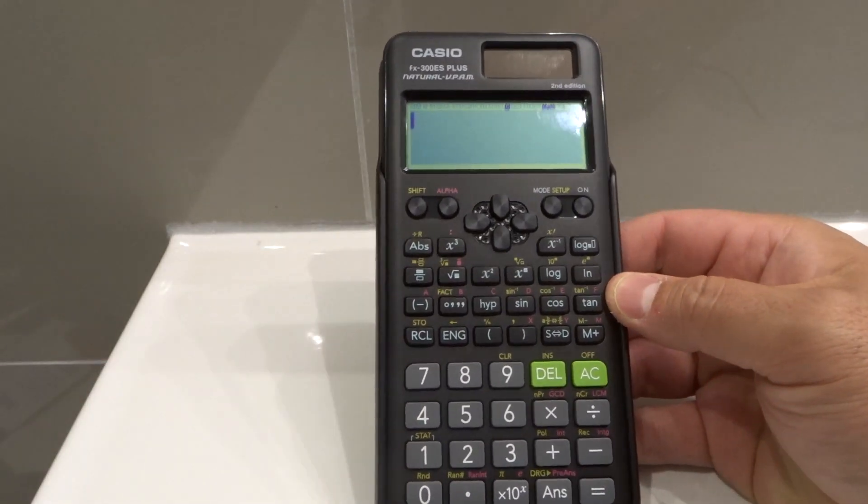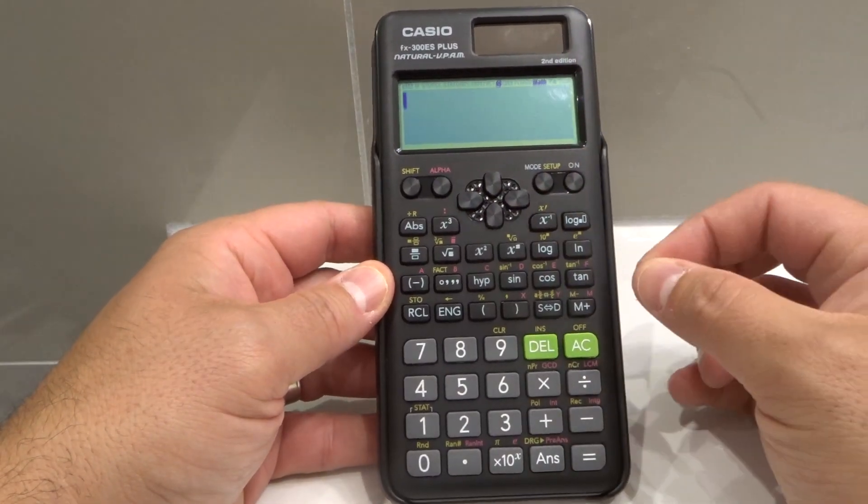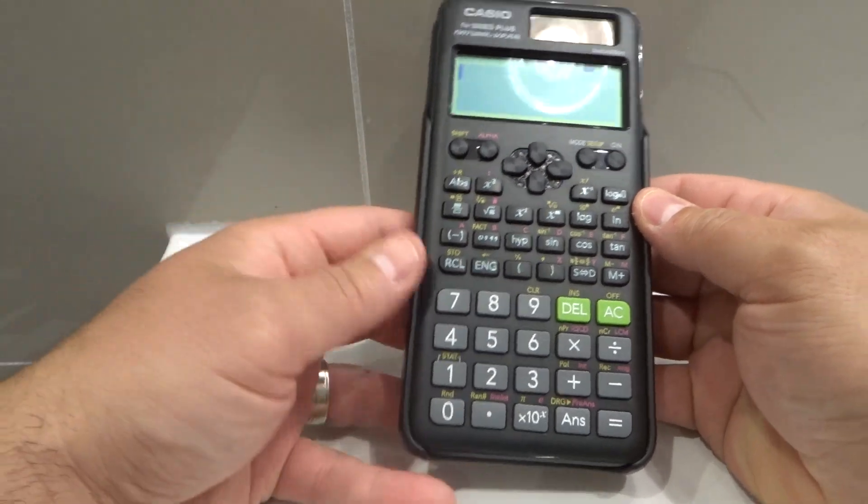I'm going to start off by showing you how to get your answers in decimal format on a per answer basis, and then I'll show you how to do it on a more permanent basis.